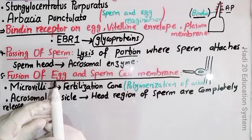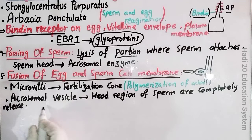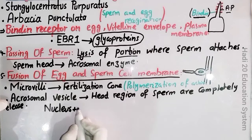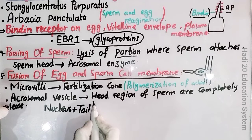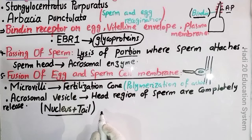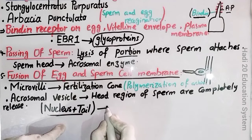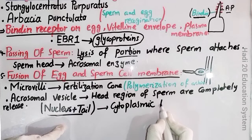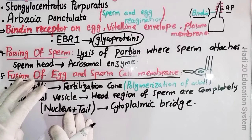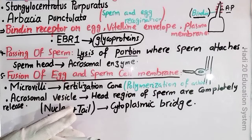اور ساتھ میں dear friends دو چیزیں نکلیں گے: ایک تو acrosomal vesicles sperm سے نکلیں گے، اور دوسری چیز یاد رکھنی ہے — جو nucleus ہوگا وہ release ہوگا۔ Nucleus کے ساتھ ساتھ یہاں سے centrioles بھی release ہوں گے — یعنی کہ دو چیزیں pass ہوں گی: ایک nucleus اور دوسرا tail والا region۔ یہ دونوں egg کے cytoplasm کے اندر pass ہو جائیں گی، اور وہاں پہ جا کے ایک cytoplasmic bridge بن جائے گا — cytoplasmic bridge بھی polymerization of actin کے نتیجے میں بنے گا۔ اور یہ سوچا جاتا ہے کہ جو cytoplasmic bridge ہے وہ sperm کے ساتھ connect ہو سکتی ہے۔